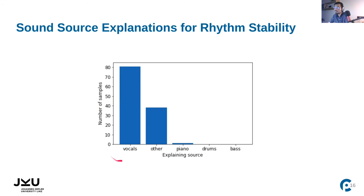When we use Audio LIME to explain the rhythmic stability of our hip-hop songs, we see that most of these songs have vocals as the explanatory source for rhythmic stability. This makes sense because in hip-hop songs, vocals are an important contributing factor to the rhythmic feel of the song.